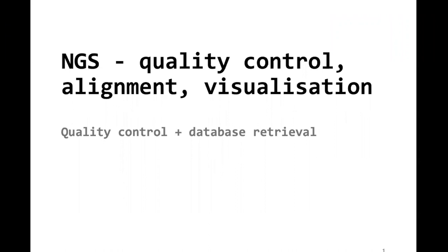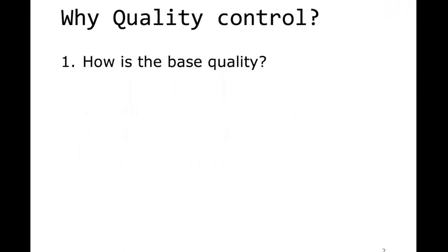This presentation will be mainly about quality control of raw sequencing reads, and we will also briefly talk about databases where you can store read data. So why would you actually perform quality control? One major reason is that when you generate sequence reads, you want to know the base quality. The base quality is a proxy for accuracy — how well the base caller knew that the base it called — A, T, C, or G — was actually that base.